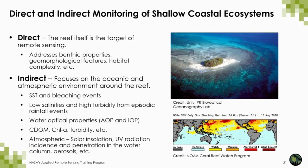Now we're going to put this into the context of a shallow coastal ecosystem, concentrating on coral reefs. There are two main methods for monitoring shallow coastal ecosystems. You can monitor them directly — meaning the ecosystem itself is the target — addressing benthic properties, geomorphological features, habitat complexity, and others. You can also use indirect methods, which are more focused on the oceanic or atmospheric environment surrounding the reef. For instance, in the case of coral reefs, sea surface temperature has been related particularly to coral bleaching events. This is shown by data from the NOAA Coral Reef Watch Program, which monitors sea surface temperatures around the world on a daily basis and relates them to levels of coral bleaching alert.